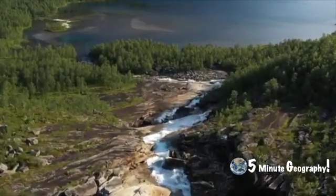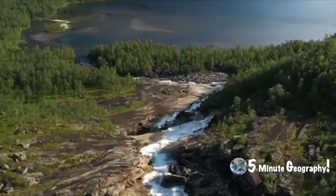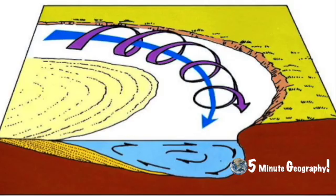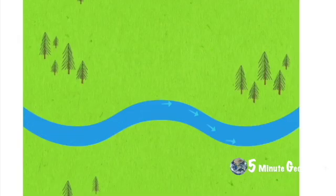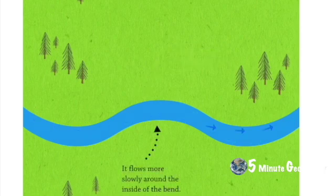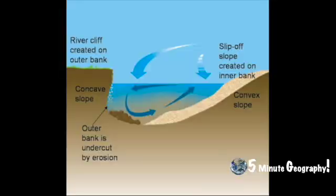Moving water has to weave around these bars of sediment, creating deeper pathways where most of the water flows — called pools — and shallow areas called riffles. This causes water to swing from side to side in a snaking motion. It flows along the surface towards the outer bank and returns along the riverbed towards the inner bank in a corkscrew-like movement, known as a helical flow.